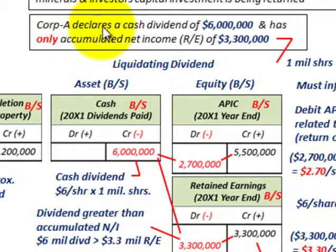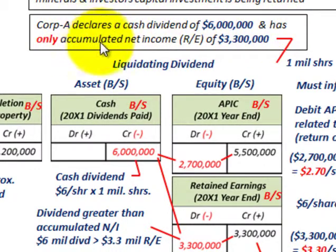In our example, Corporation A declares a cash dividend of $6 million but has only accumulated net income — that is, retained earnings — of $3,300,000.